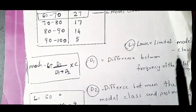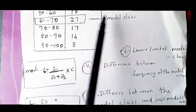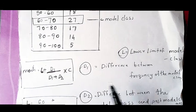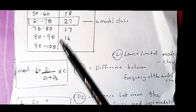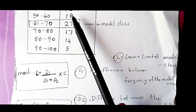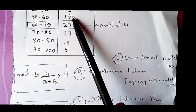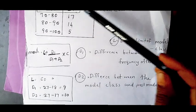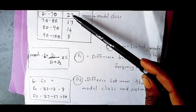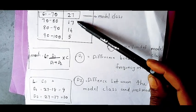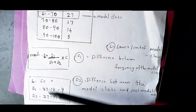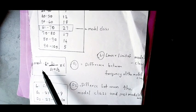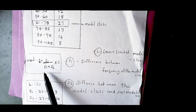L is the lower limit of the modal class. D1 is the difference between the frequency of the modal class and the preceding class. D2 is the difference between the modal class frequency and the following class frequency. The third equation is L plus D1 by D1 plus D2 into c.